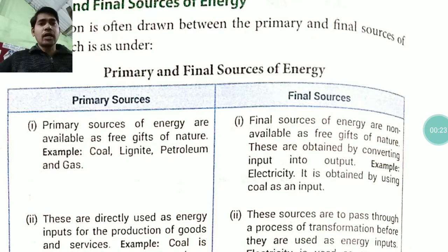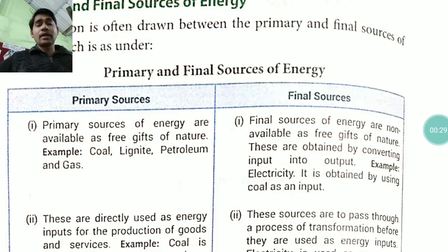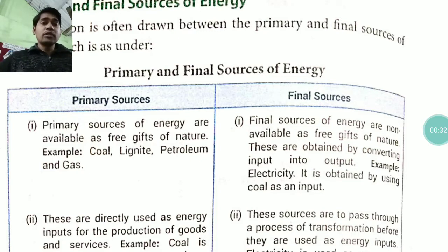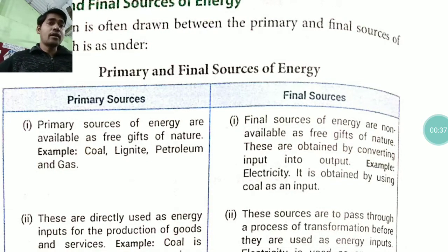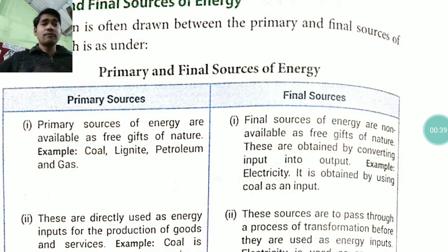Primary sources of energy are available as a free gift of nature. Examples include coal, lignite, petroleum, and natural gas. The final source of energy is not available as a free gift of nature.